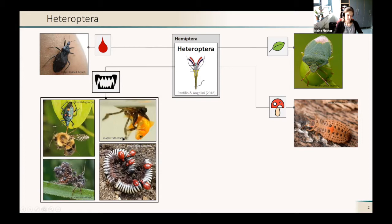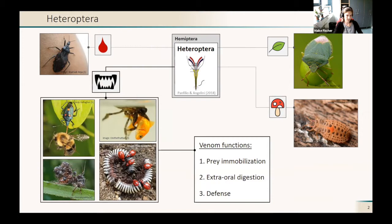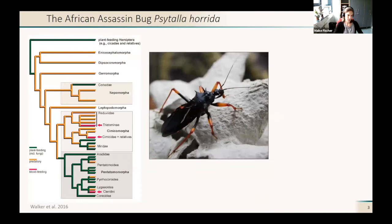They have evolved a venomous saliva, so they use venom to immobilize their prey. They have paralytic components to pre-digest it like all the other heteropterans. And they can use the venom also defensively, and that sting can really hurt a lot.